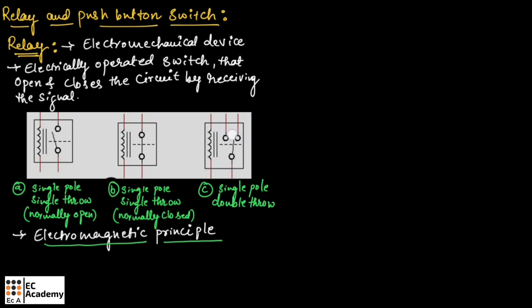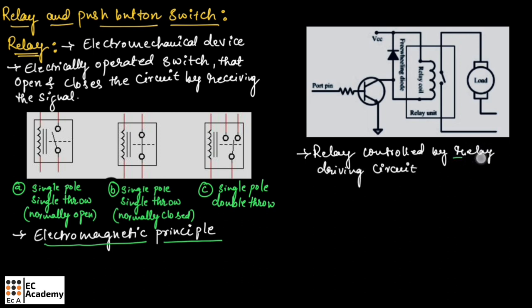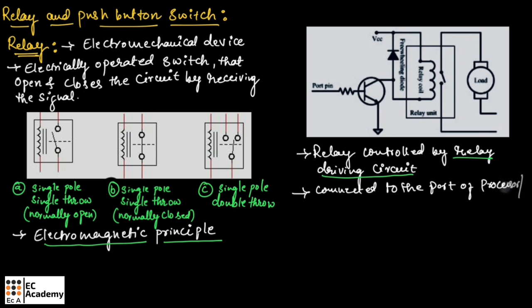For single pole double throw relay, there are two paths, and these two paths are selected by energizing and de-energizing the relay. This figure shows the interface of relay with microcontroller port through a relay driver circuit, which is designed using a transistor and a diode. The relay is normally controlled by a relay driving circuit connected to the port pin of the microprocessor or controller.